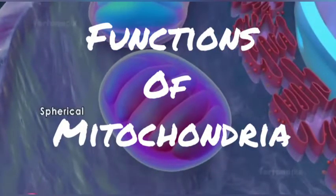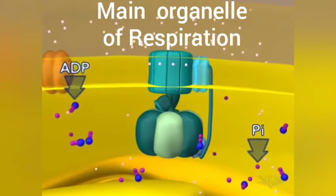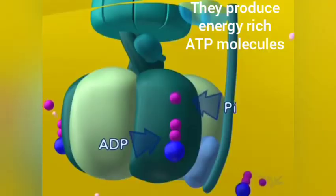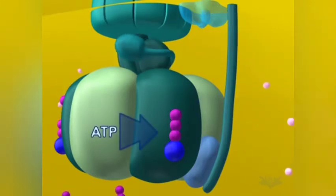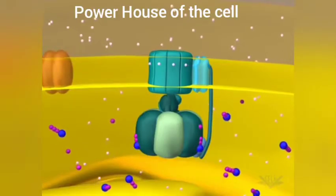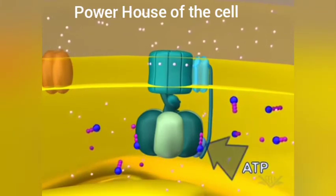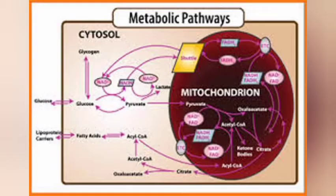Now we can see the functions of mitochondria. Mitochondria is the main organelle of cell respiration. They produce a large number of ATP molecules, so they are called the powerhouse of the cell or ATP factory of the cell. Mitochondria also helps the cells to maintain normal concentration of calcium ions, and it regulates the metabolic activity of the cell.